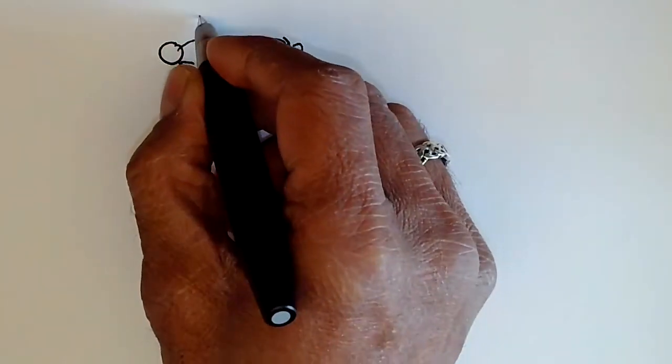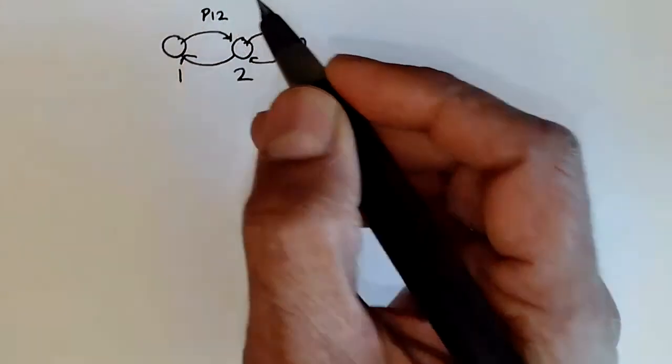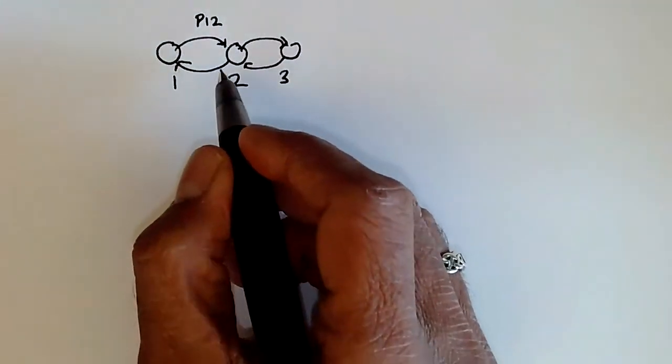which has certain transition probabilities like this. And when we draw transition probabilities such as this 1, 2, we mean that's the probability of going from state 1 to state 2.